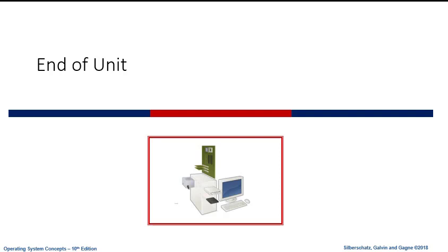That takes care of our discussion of probably the most significant management system of the operating system — the memory management system. We've looked at two units on that topic. The first unit was more or less historical, talking about early memory management systems. This unit is the modern version of memory management in computer systems. It allows a process to function without necessarily having to load the whole thing into memory, and that feature allows more processes to run at the same time and the system to operate more efficiently. Go back and study your notes, finish up your study guide, get it completed and turned in. Come on back and we will proceed to examine the operating system's management of the file system. Thank you.